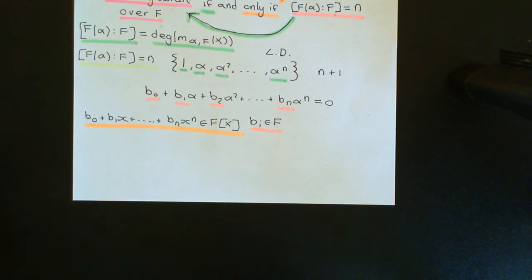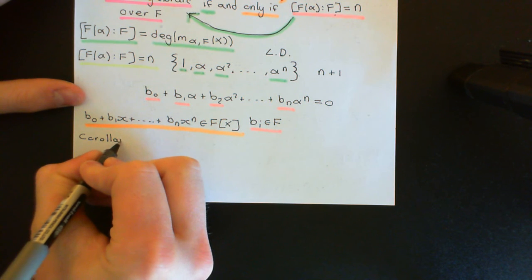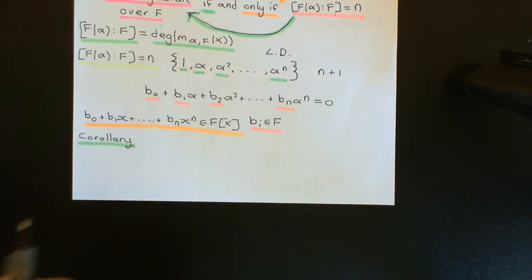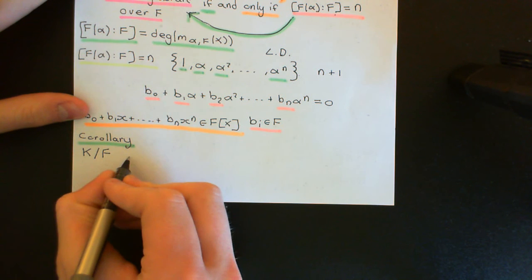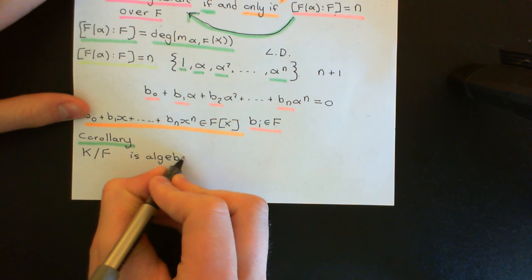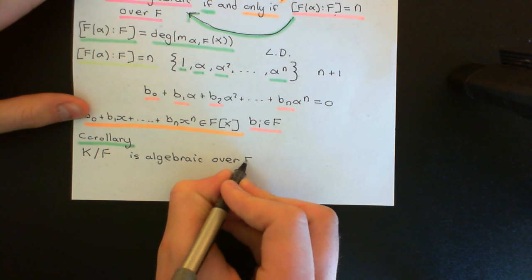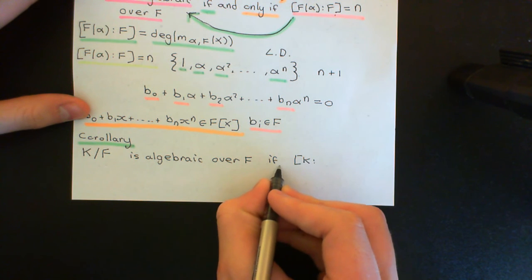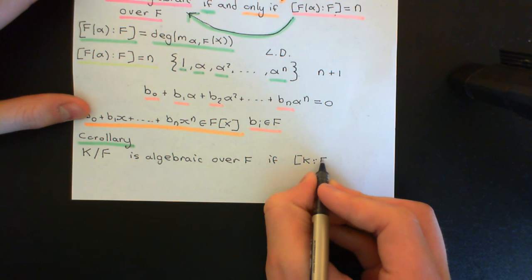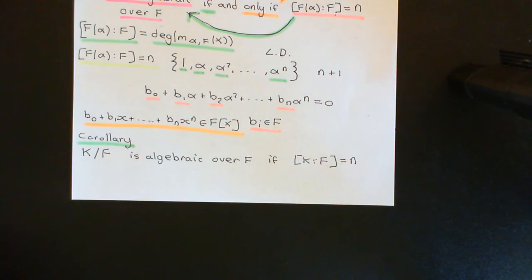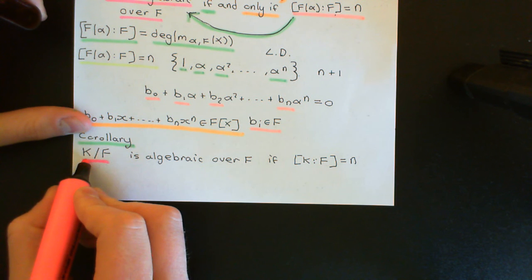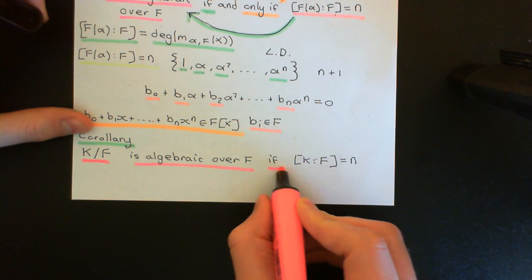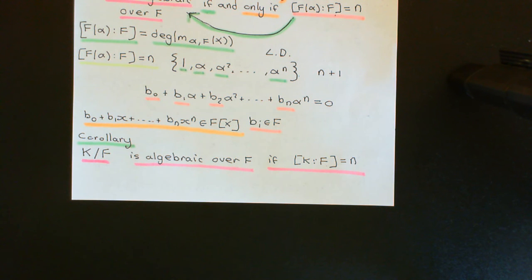Now one final theorem — a corollary of this, effectively. The corollary is: you can conclude that a field extension K over F is algebraic if it's finite. So if the degree of K over F is some finite value n — and note this is just 'if' this time, not if and only if — then you can instantly conclude that K is an algebraic field extension over the smaller field capital F.